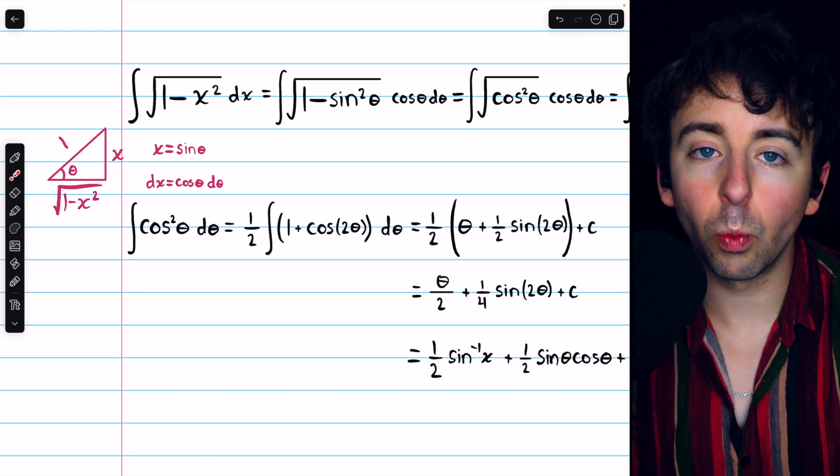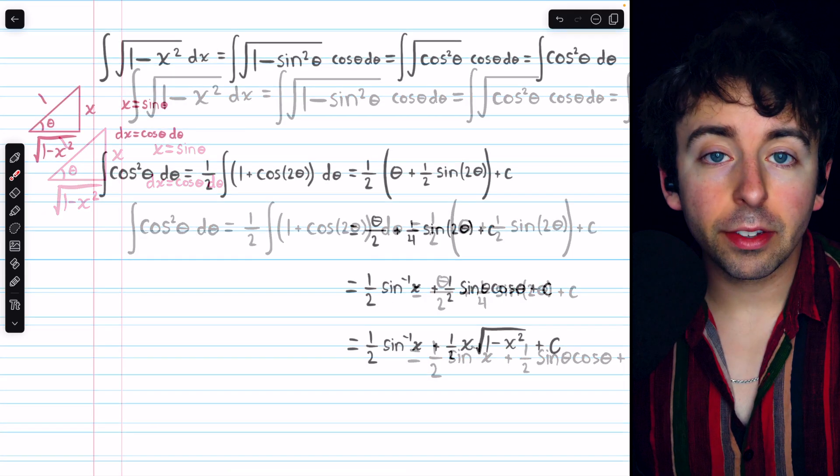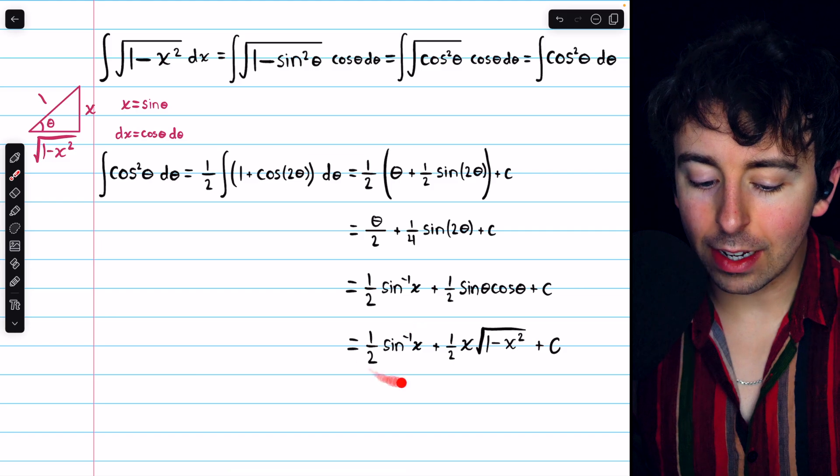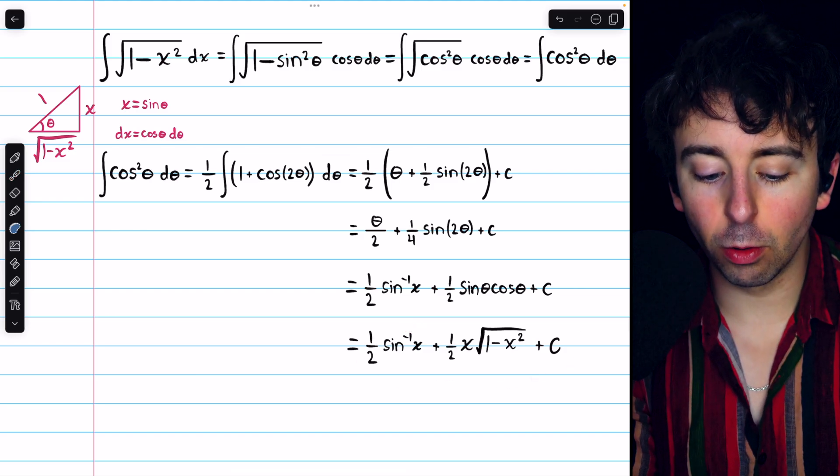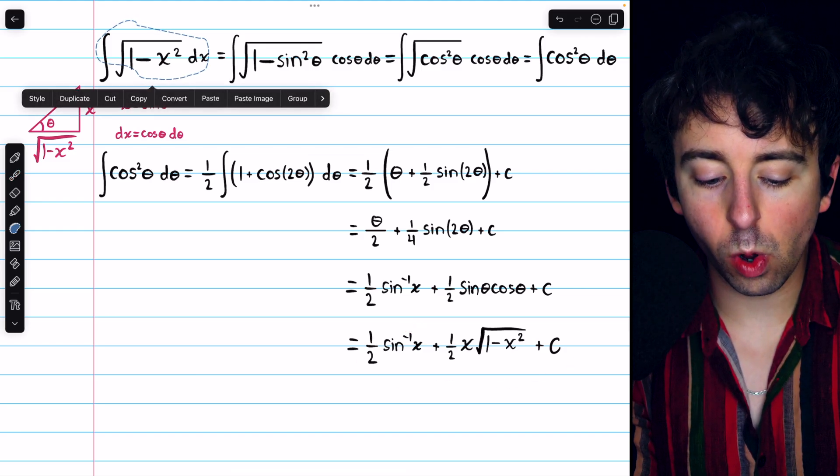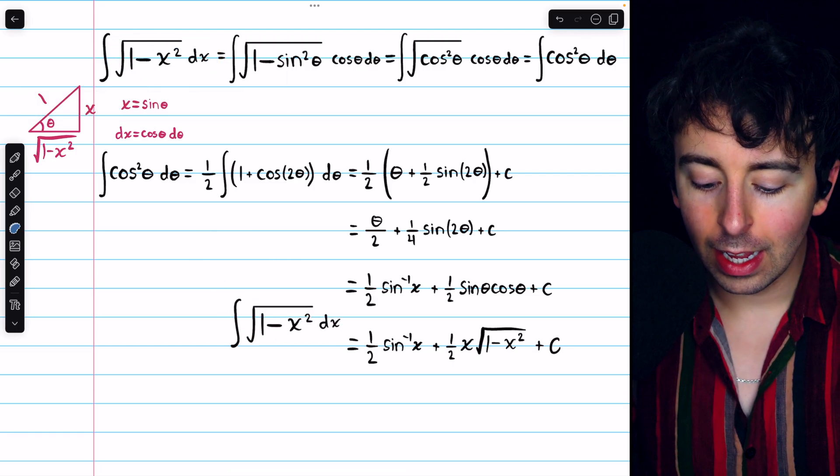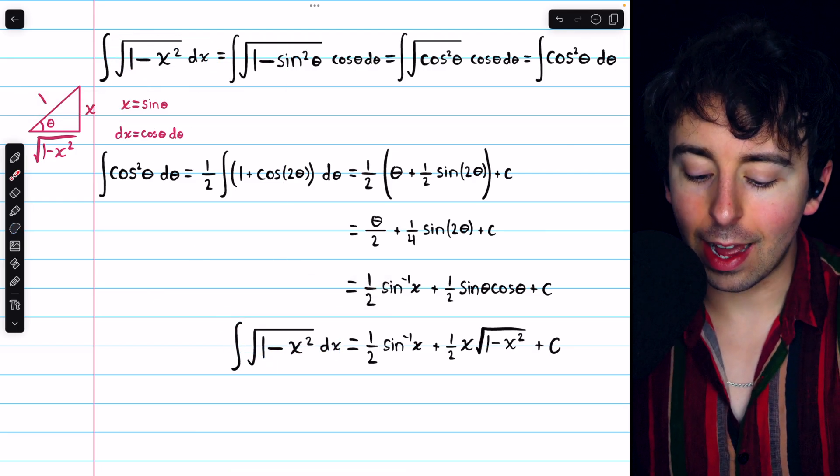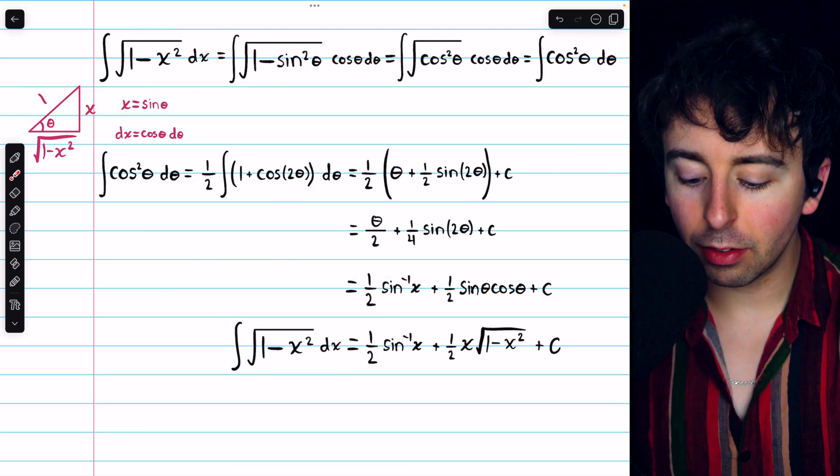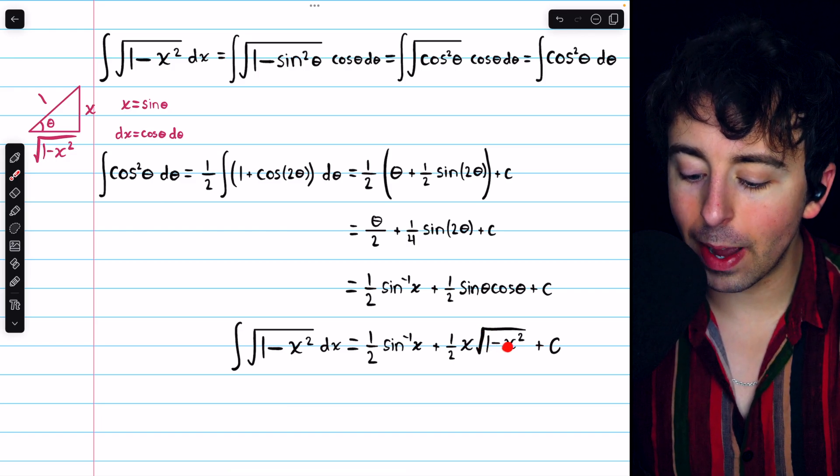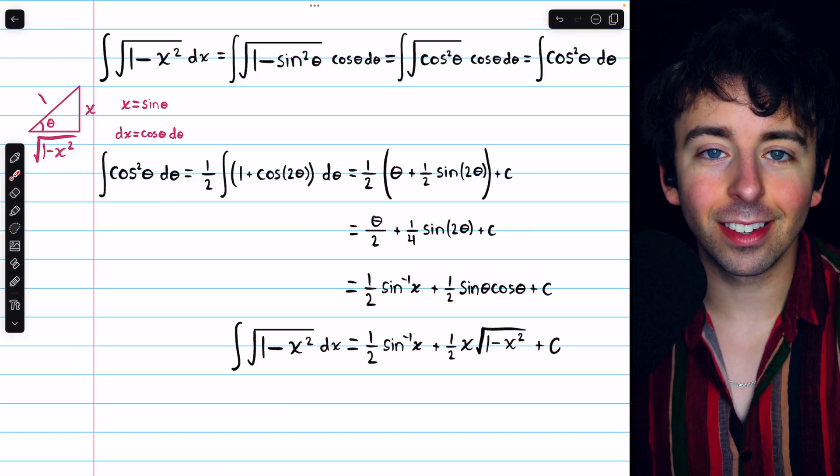So, cosine theta is root 1 minus x squared. Thus, we arrive at the final solution in terms of x. The integral of the square root of 1 minus x squared is equal to 1 half arc sine x, plus 1 half x times the square root of 1 minus x squared, plus c.